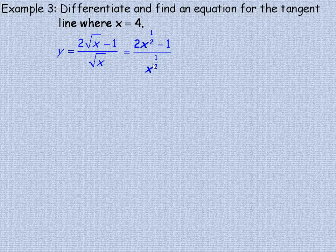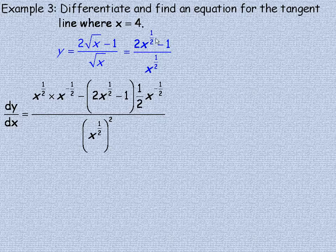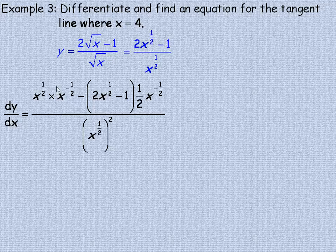Now this is a quotient, so I will use the quotient rule here. The quotient rule says remember the denominator times the derivative of the numerator, and the derivative of 2x to the half, we use the power rule. A half comes down and multiplies by 2, so a half times 2 is 1, so that's where the coefficient of 1 comes from.